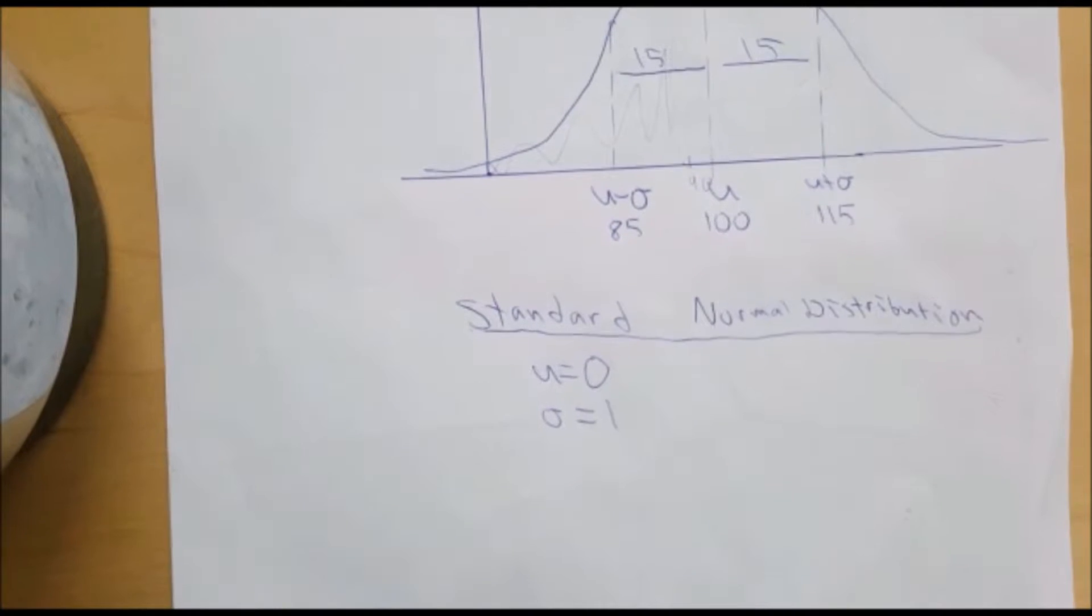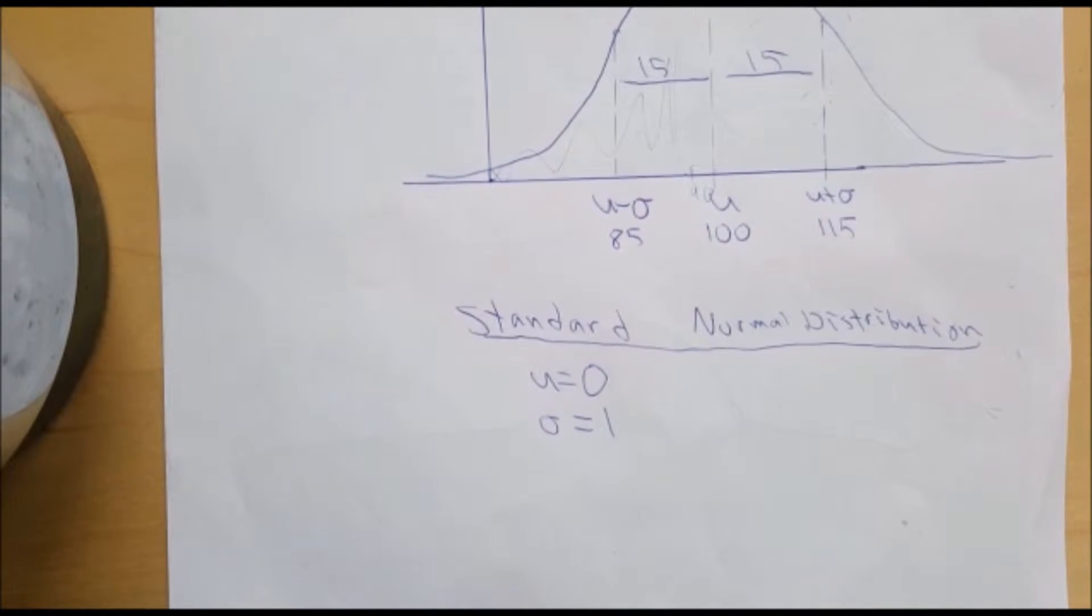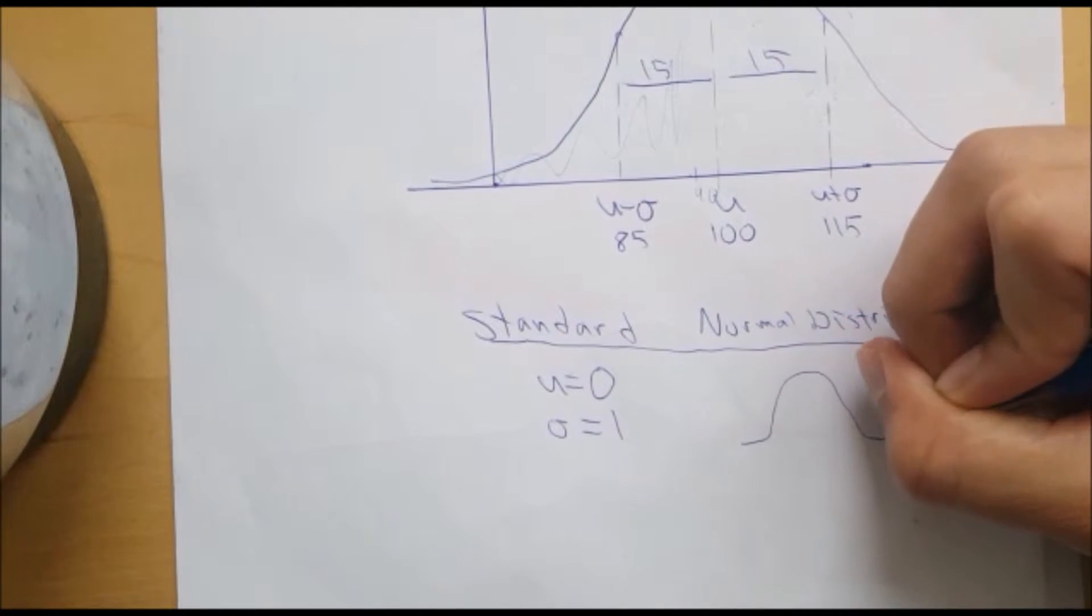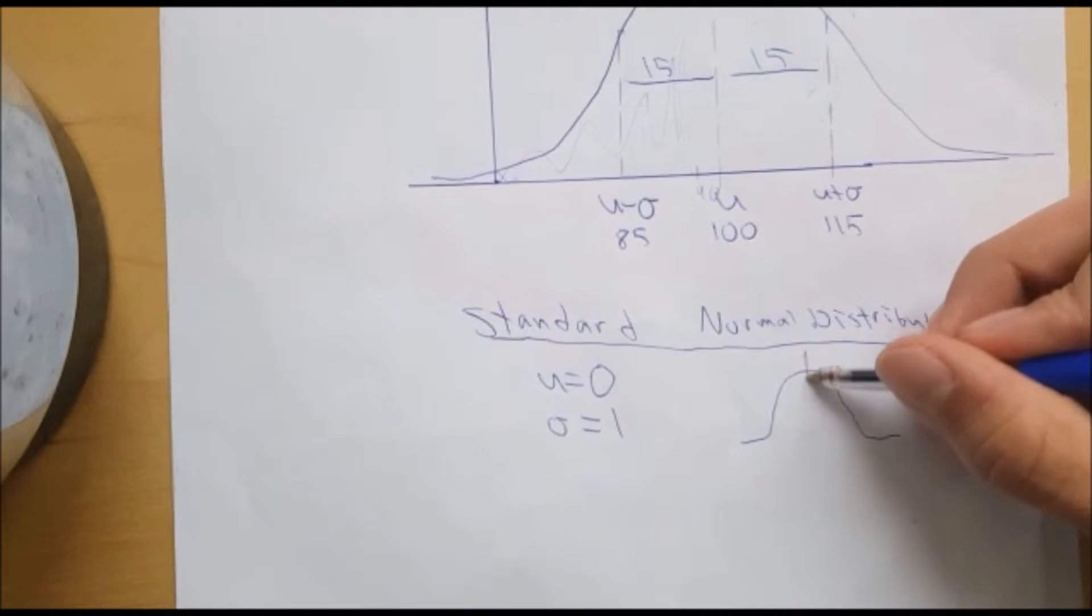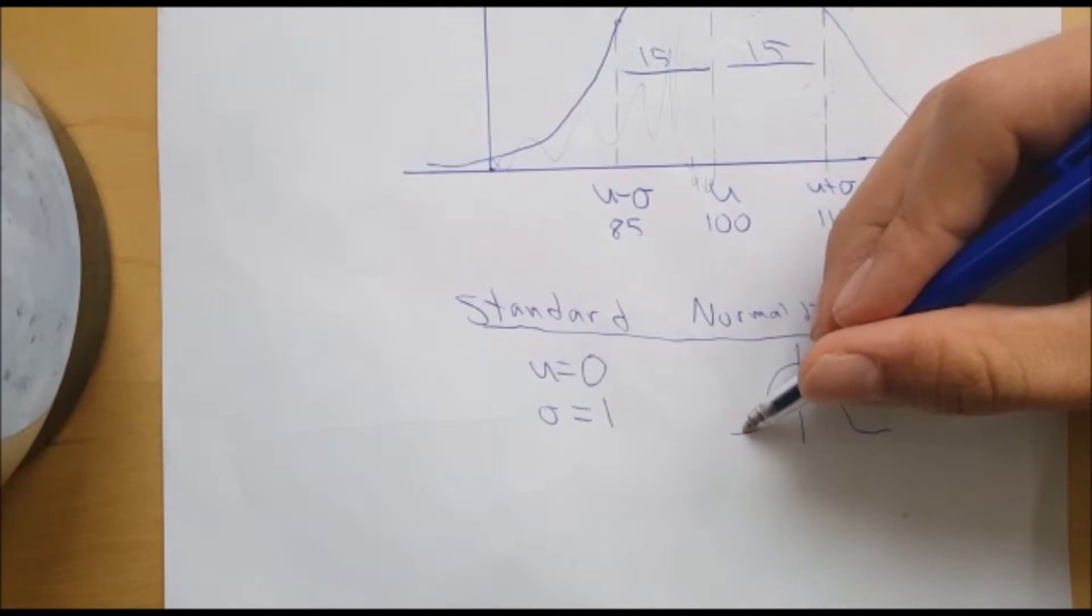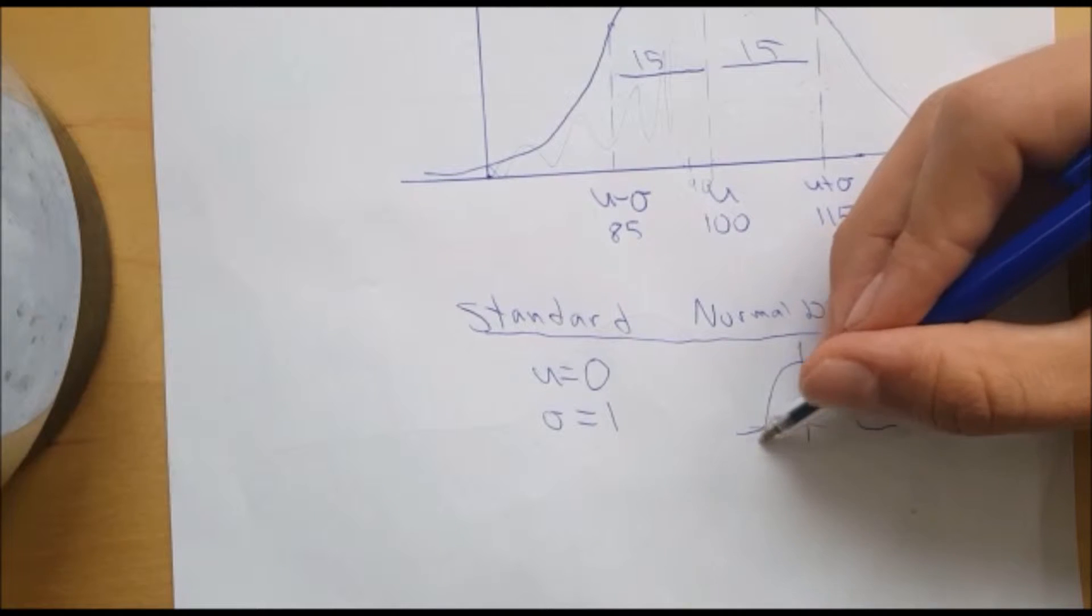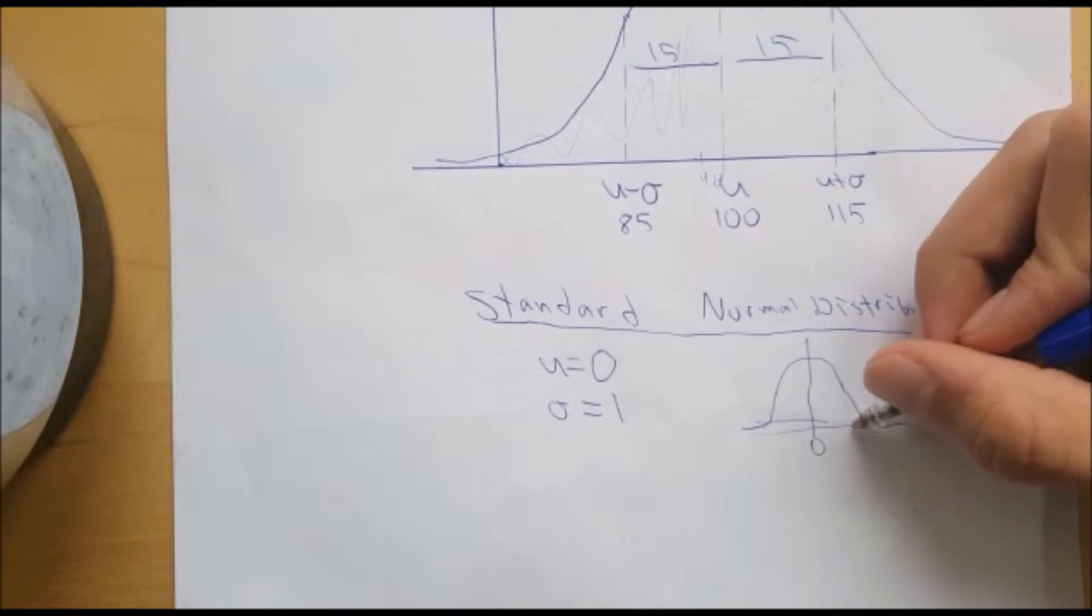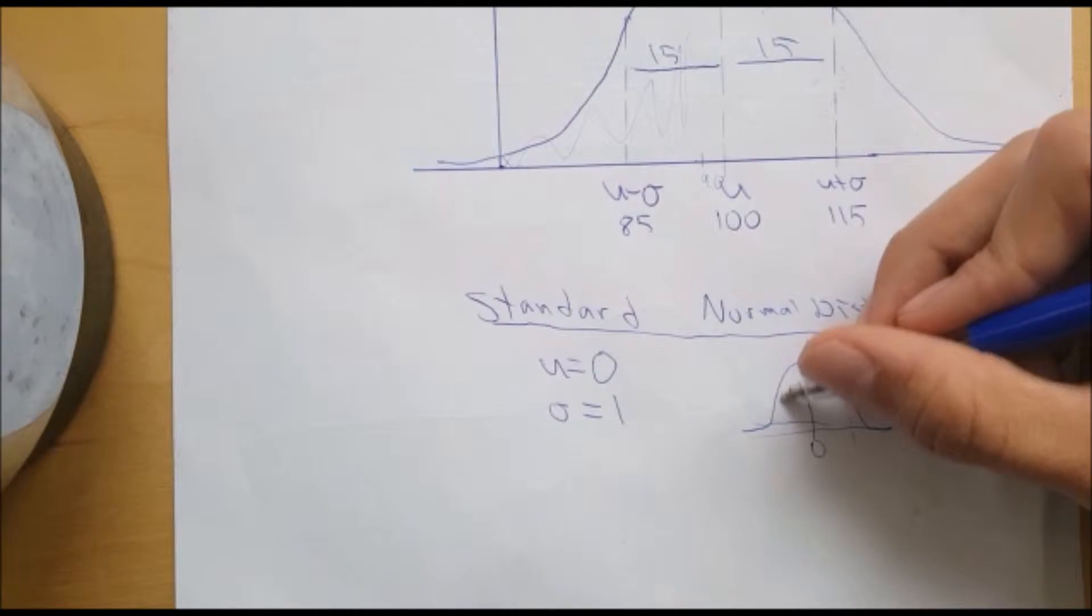There's also this thing called the standard normal distribution and this is a special curve in which the mean is zero and the standard deviation is equal to one.